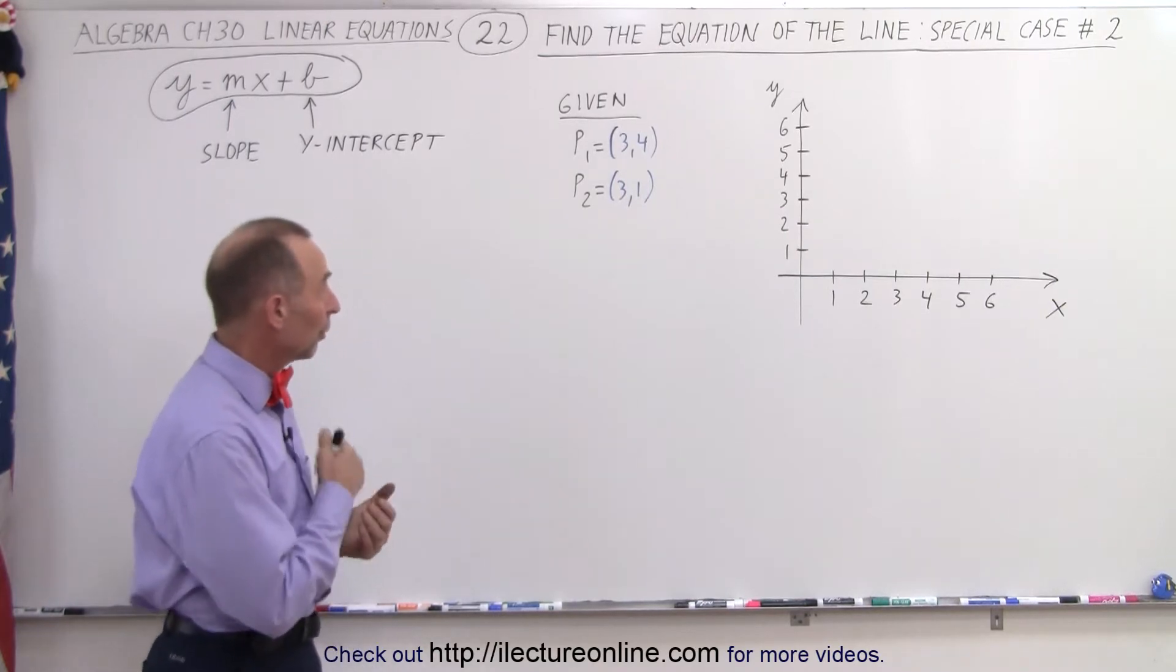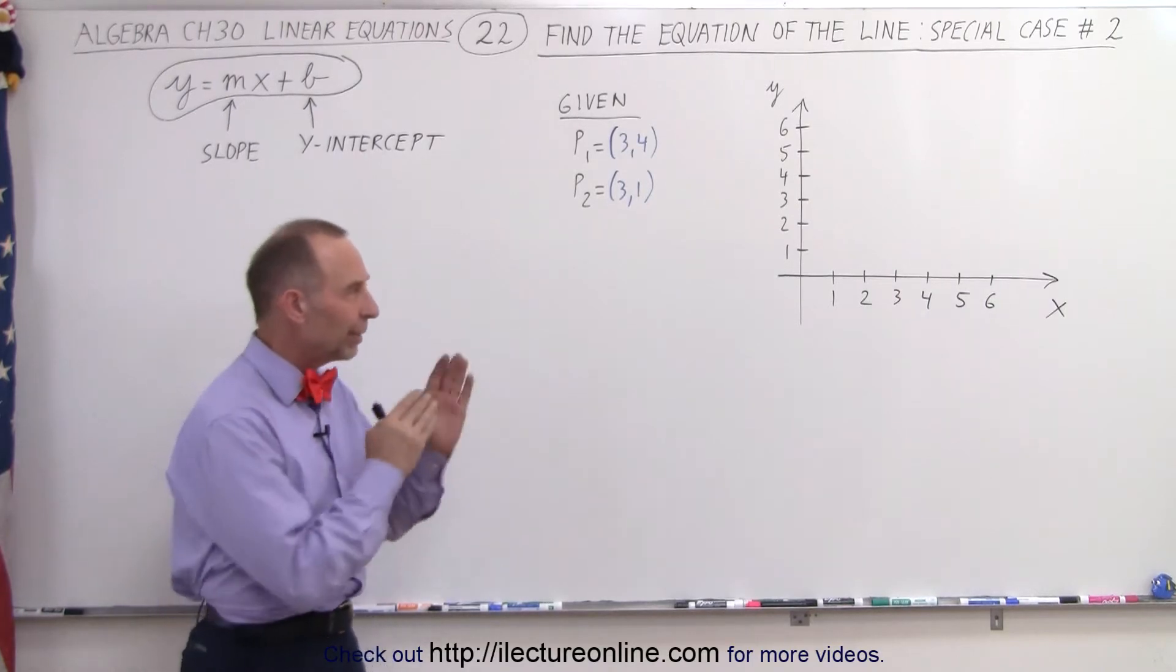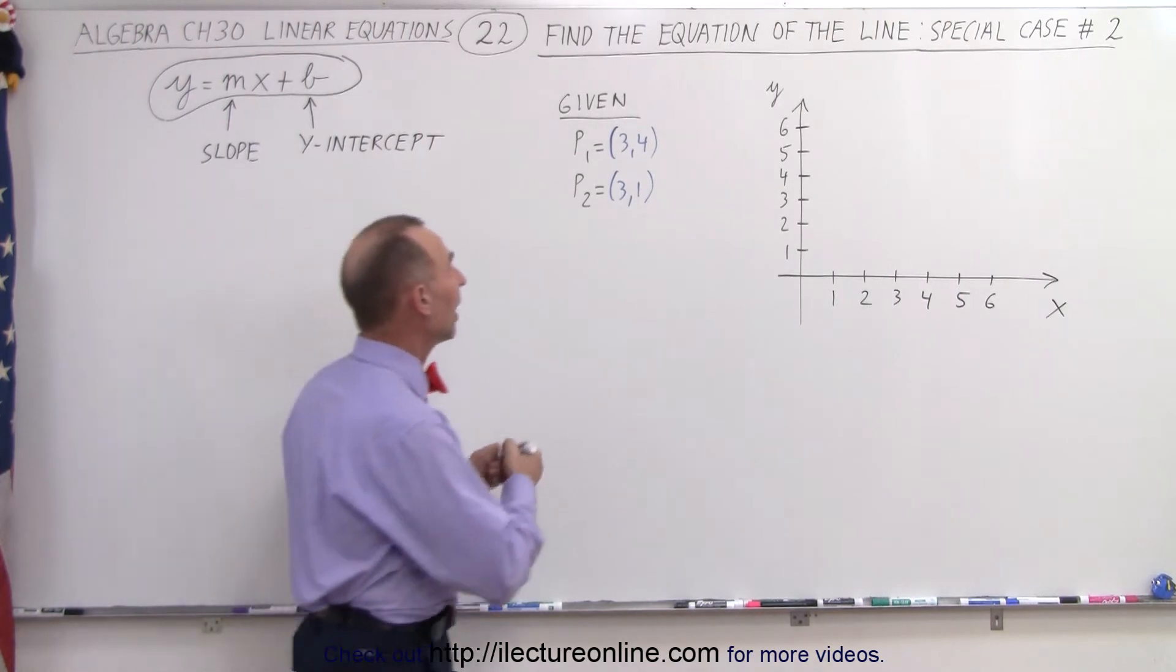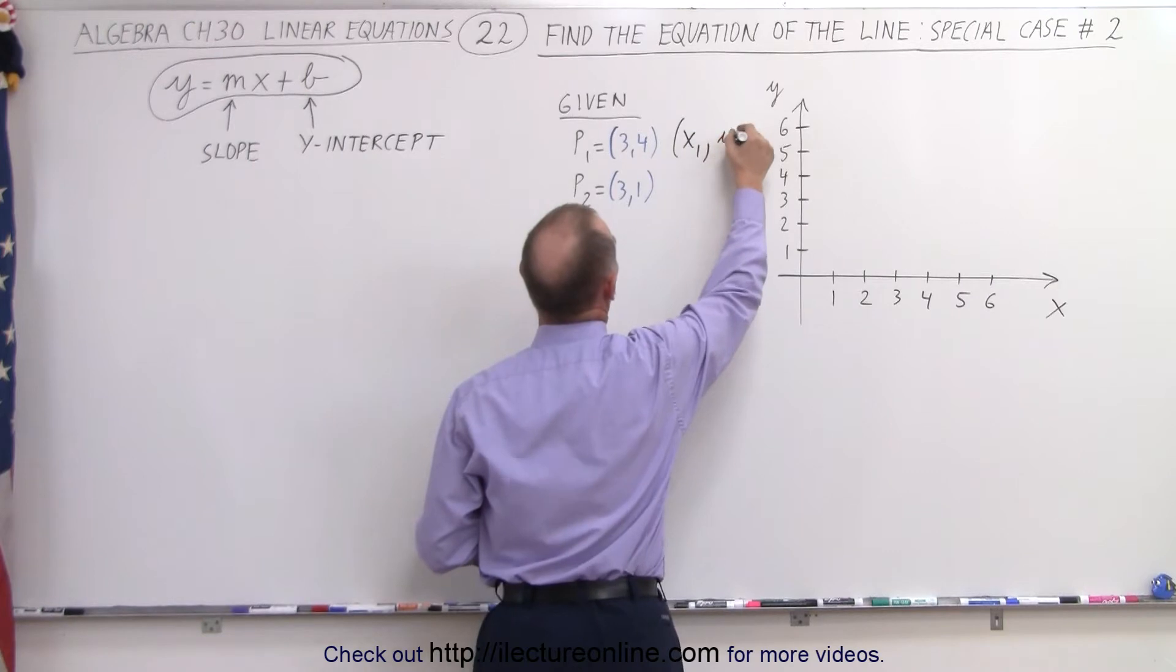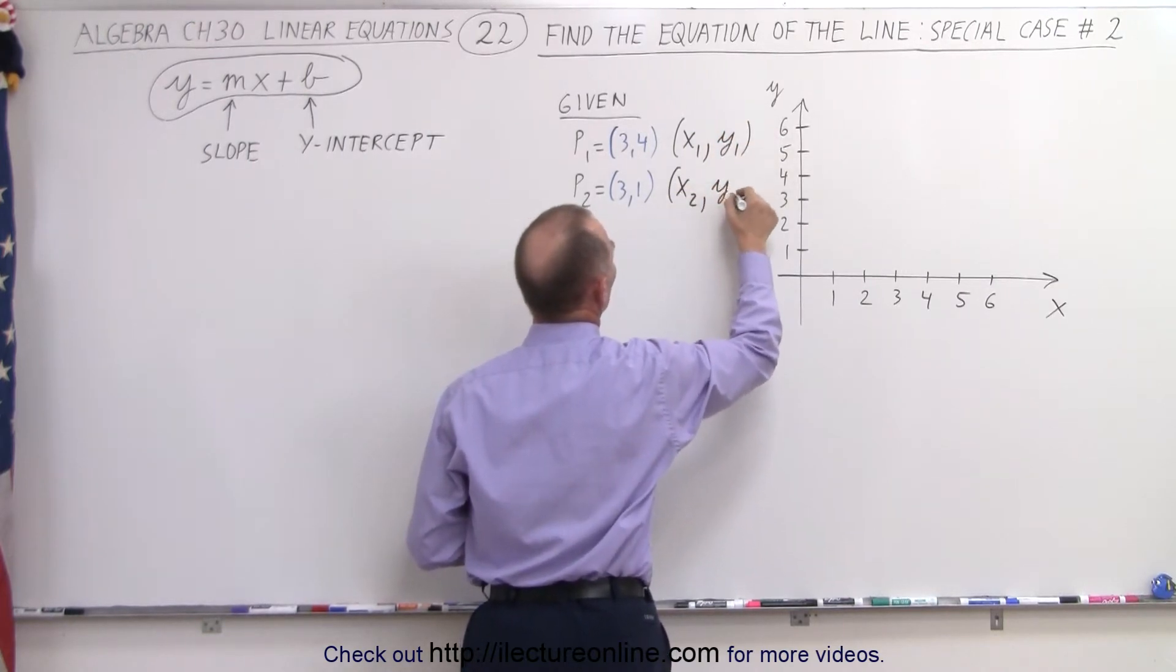We're given the following points. Point 1 is 3, 4 and point 2 is 3, 1. Let's not yet place the points on the x, y plane. Let's see what happens, but let's label these as point number 1, representing the x and y coordinates, and we'll call them x1, y1, and we'll call these x2, y2.